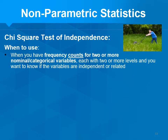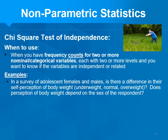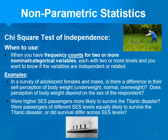When do you use this one? When you have frequency counts but with two or more nominal or categorical variables — each with at least two levels — and you want to know if the variables are independent or related. Examples: In a survey of adolescent females and males, is there a difference in their self-perception of body weight — underweight, normal, or overweight? Does perception of body weight depend on the sex of the respondent? Or: were higher-SES passengers more likely to survive the Titanic disaster?